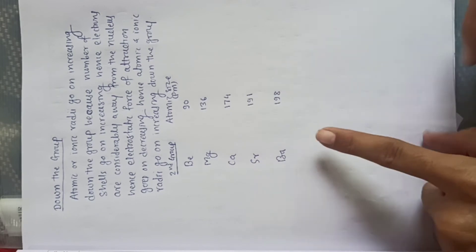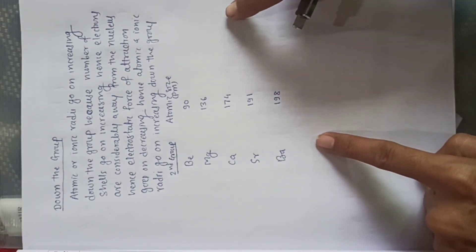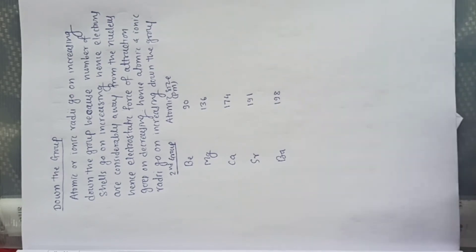Because electrons are kept away. Suppose here is the nucleus, electrons are here. In the next shell, it will be here. So the distance will go on increasing obviously.